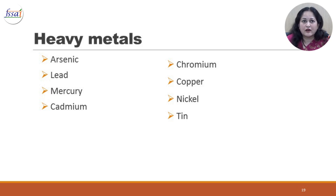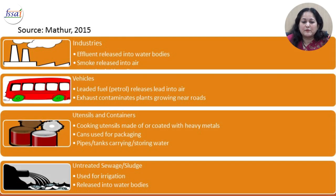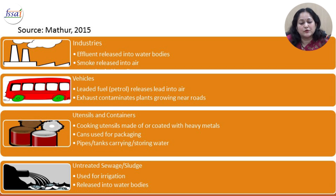The heavy metals of concern are arsenic, lead, mercury, cadmium, chromium, copper, nickel, and tin. These enter the food chain because industries release effluents into water bodies, smoke into the air, or bury waste in soil. Vehicles using leaded fuels release lead into the air, contaminating plants growing near roads. Utensils and containers made of metals can leach these metals into food. Pipes and tanks carrying or storing water can also leach heavy metals into water. Untreated sewage and sludge used for irrigation or released into water bodies add to contamination levels.